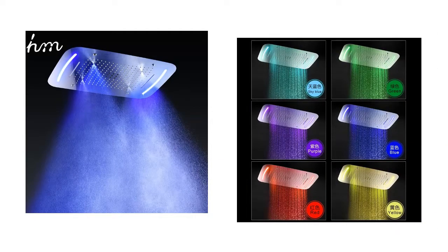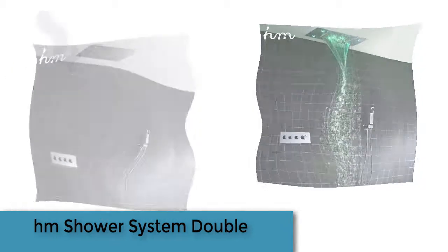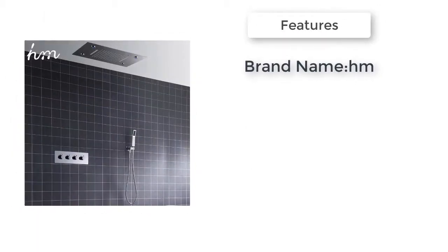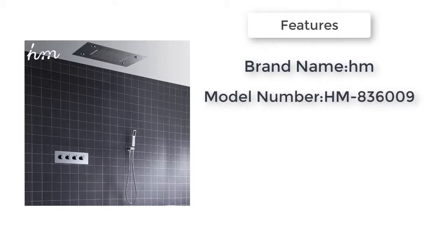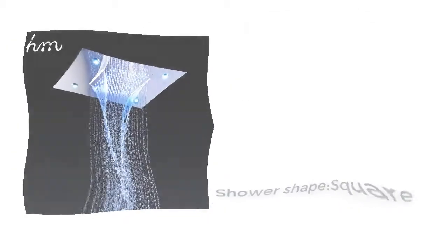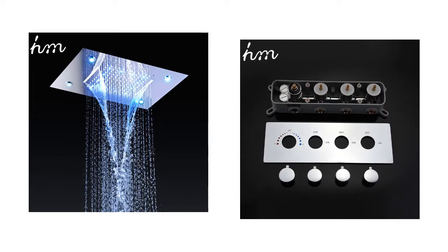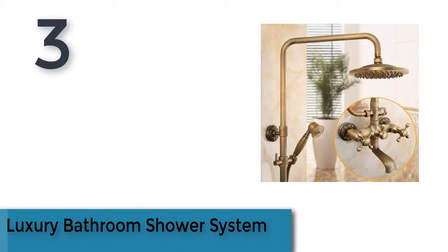Item number four is the shower system double. Brand name model number HM 836009. Material brass, surface finishing chrome plated, shower shape square, height adjustable yes. Rain shower set function one: rainfall, rain shower function two: hand shower head. Item number three is luxury bathroom shower system.